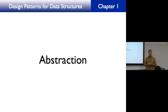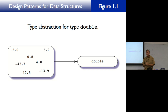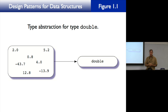Chapter one is titled Abstraction. Abstraction in computer science is hiding detail. We're going to go through and describe the different kinds of abstraction you deal with when you program in a high-level language like C++. The first kind of abstraction, starting at the bottom and working our way up, is called type abstraction. In C++, if you have an int or a double, you have a variable with a type.